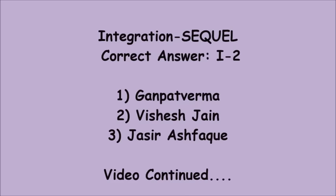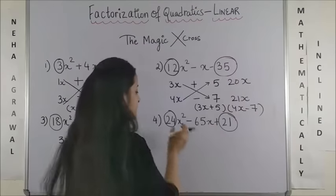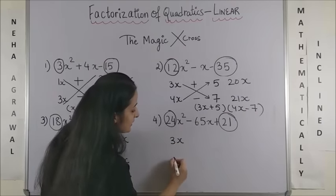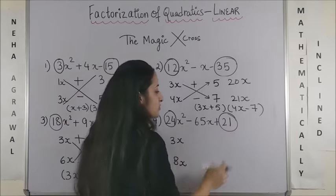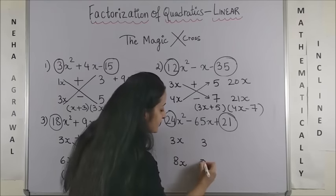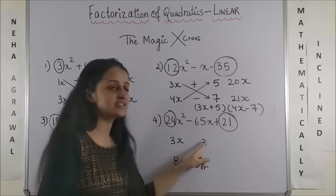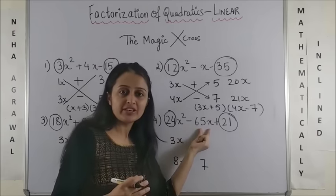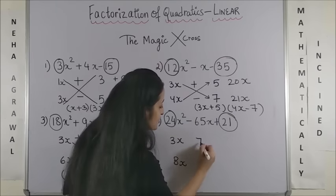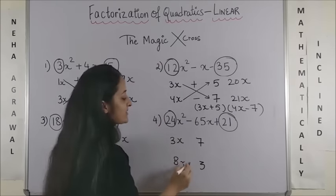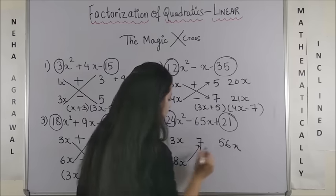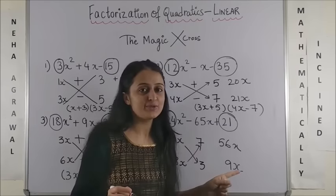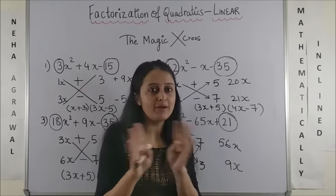Congratulations guys, keep it up. Now for the next question, if I have 24 and I try expressing it as let's say 3x into 8x and this one 21. So, if I try writing 3 into 7, you would realize this is 21 and this is 24. Even if I try to add it up, it would not give me 65. And if I try to switch this, what happens now? If I multiply, it is 56x and if I multiply this, this is 9x.